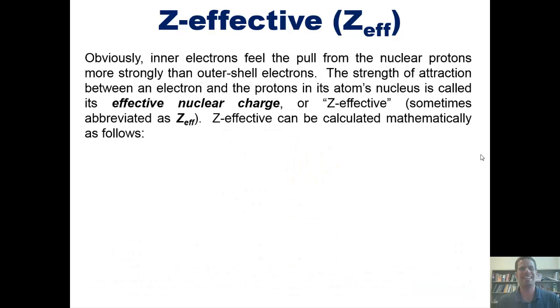Obviously, inner electrons feel the pull from the nuclear protons more strongly than outer shell electrons. The strength of attraction between an electron and the protons in its atom's nucleus is called its effective nuclear charge, or Z-effective, which is sometimes abbreviated as Z-eff, and I sometimes just call it Z-eff.